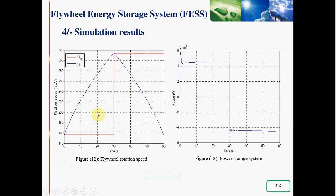Then the speed goes from 314 to 157 radian per second in 30 seconds to restore 450 kW.